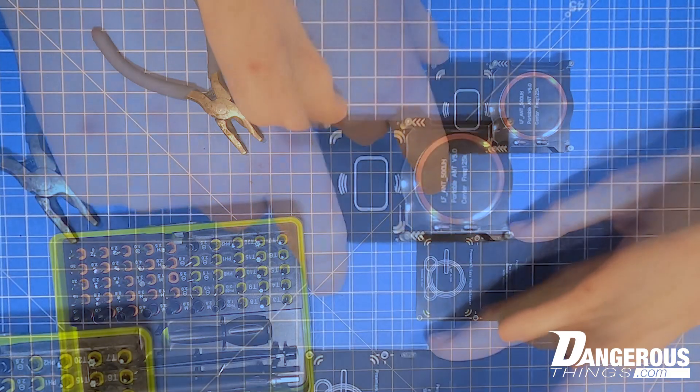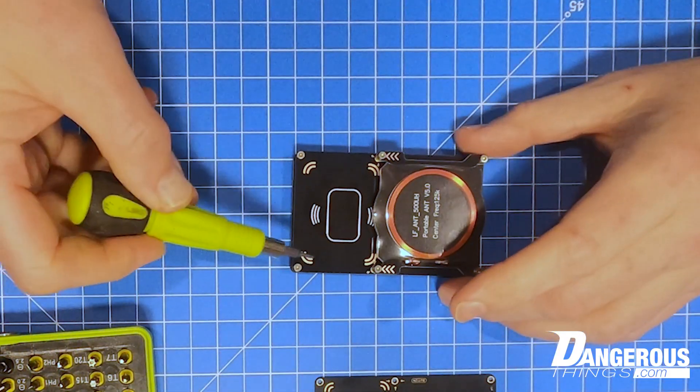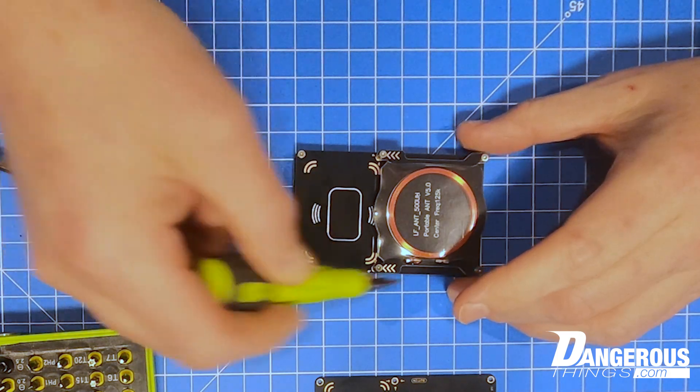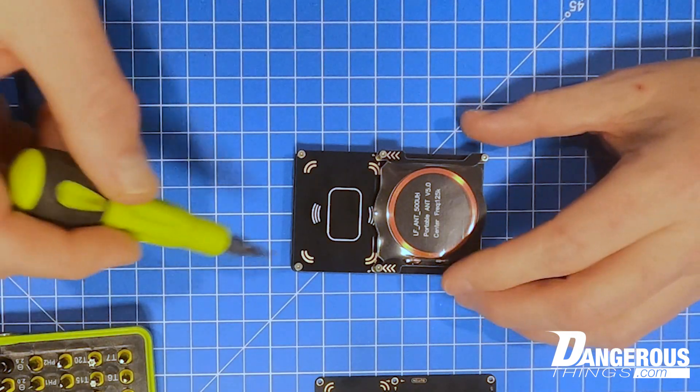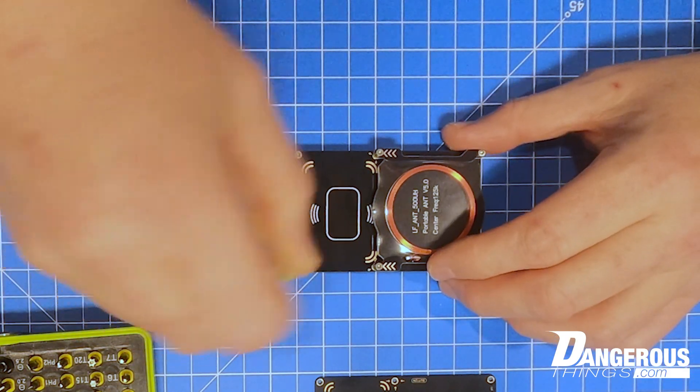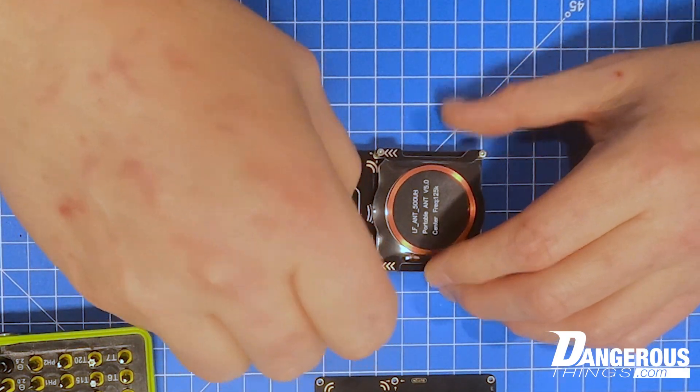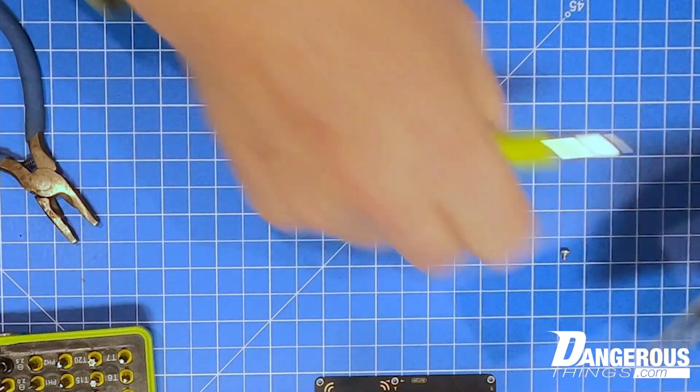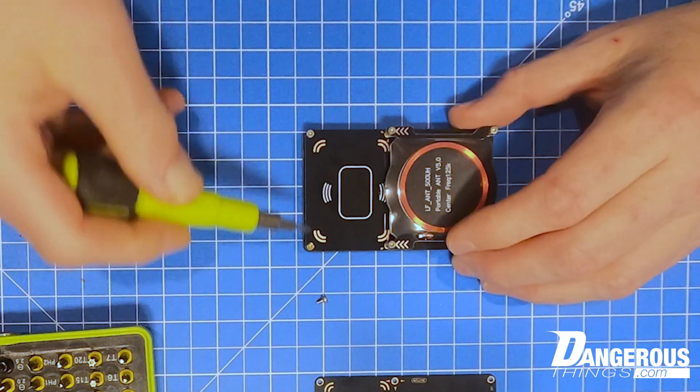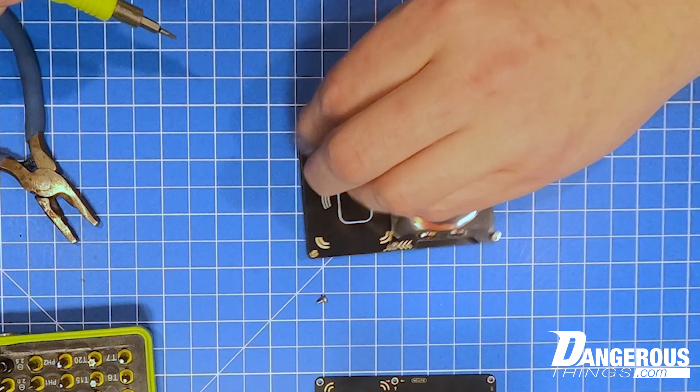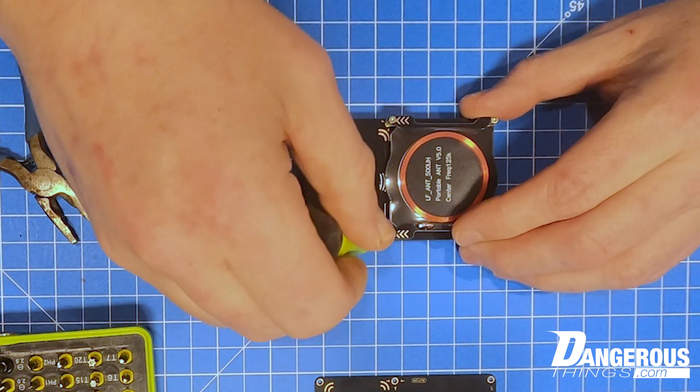When you take apart the board, what I like to do is put the screws next to where they go so that they're in order and in the right place. The Proxmark has six screws you have to take out. These two screws at the bottom end here are shorter than the other four. Not a big deal, but just important to remember when you're putting it back together.